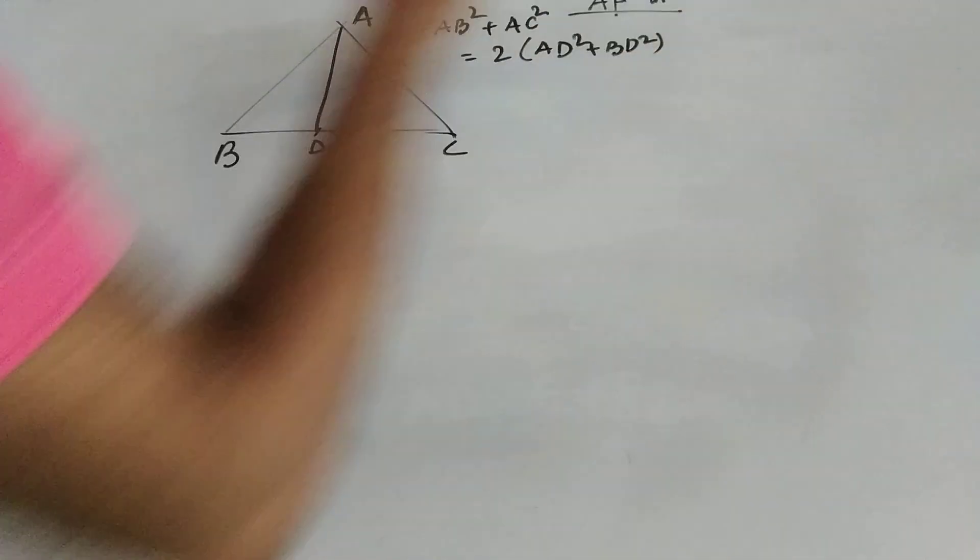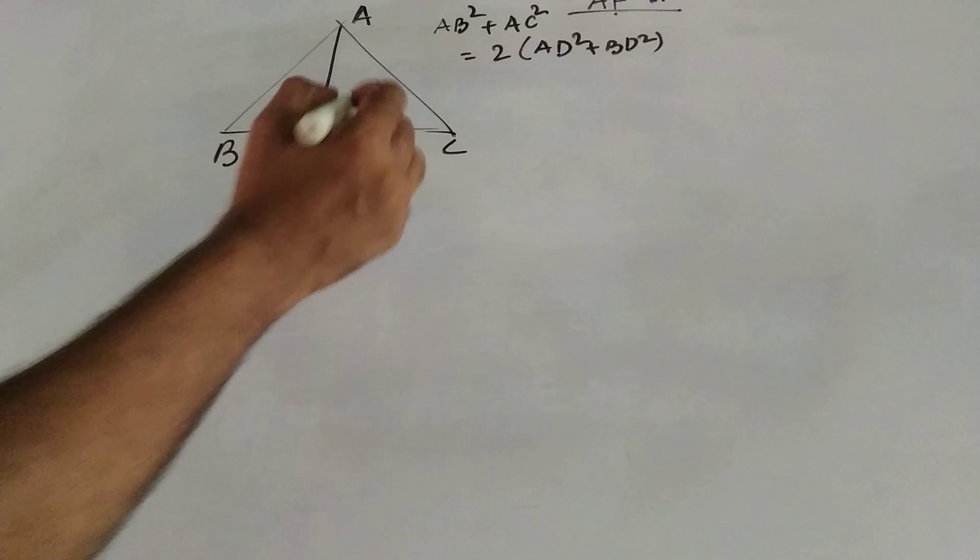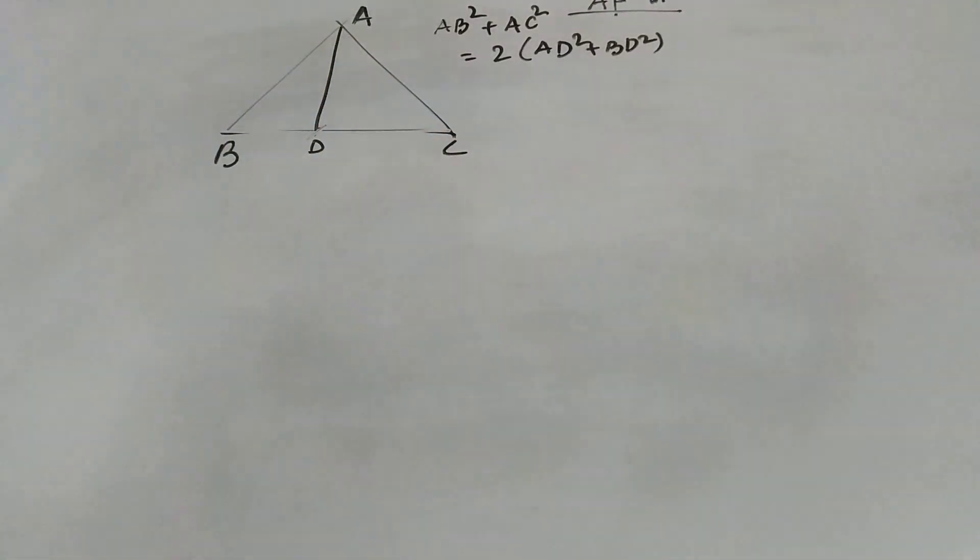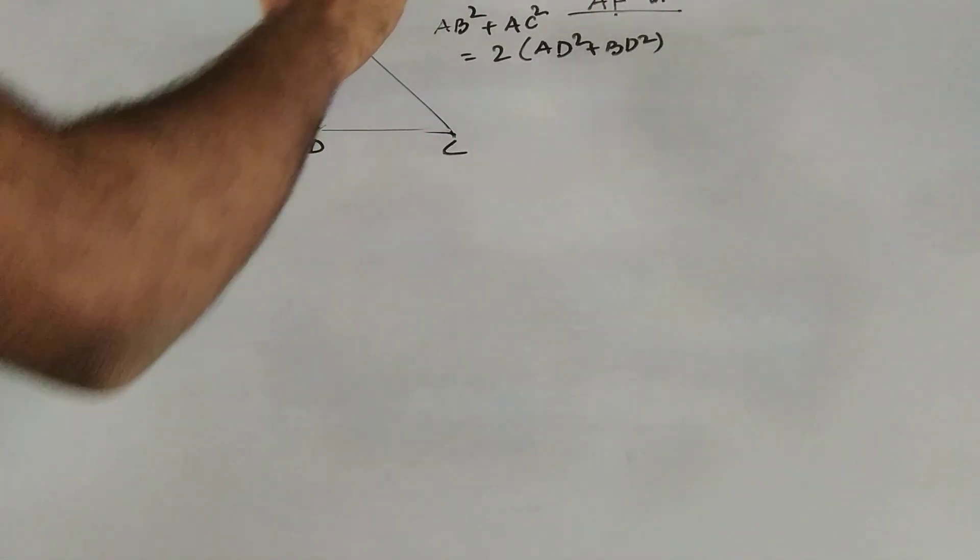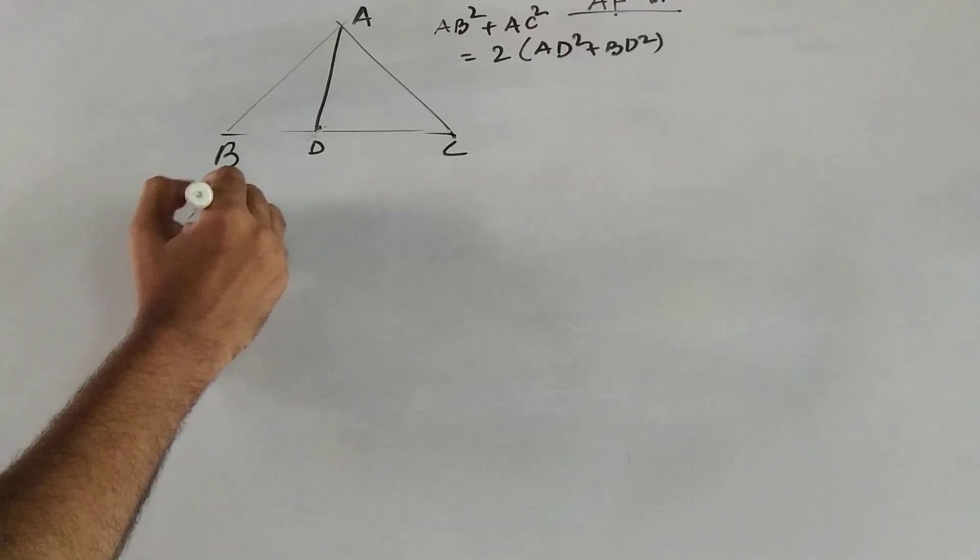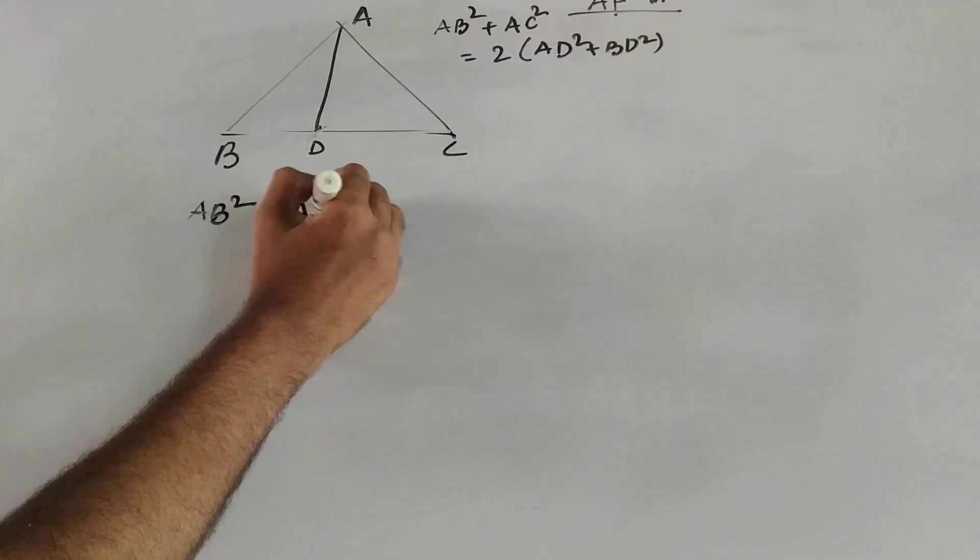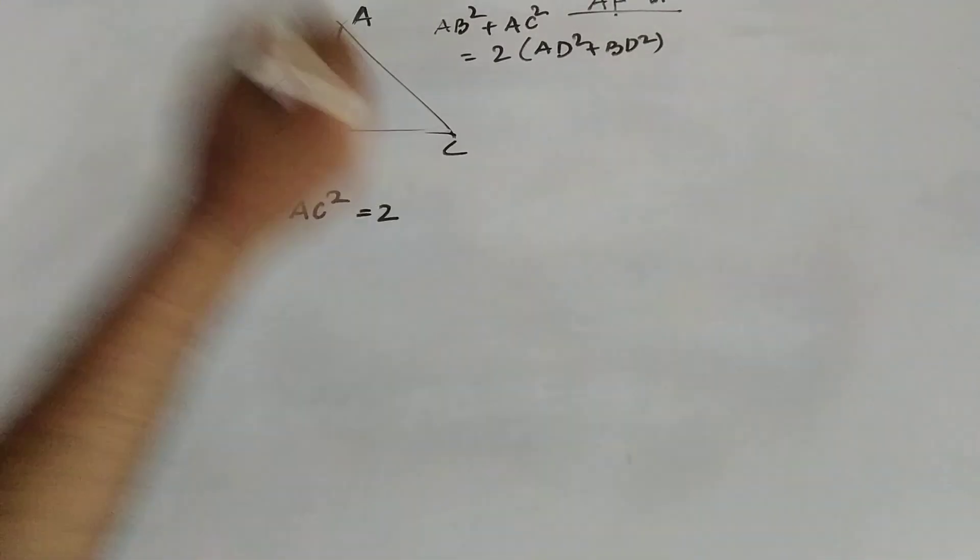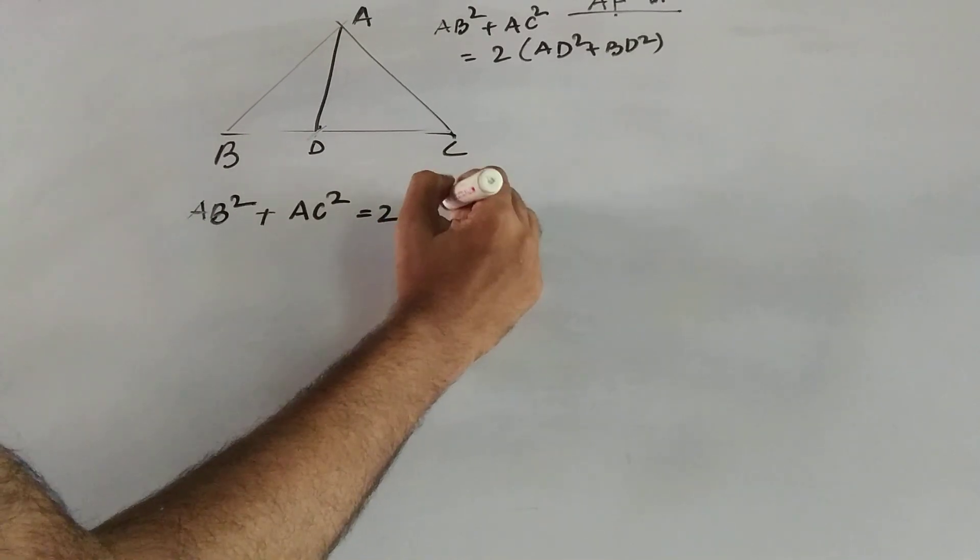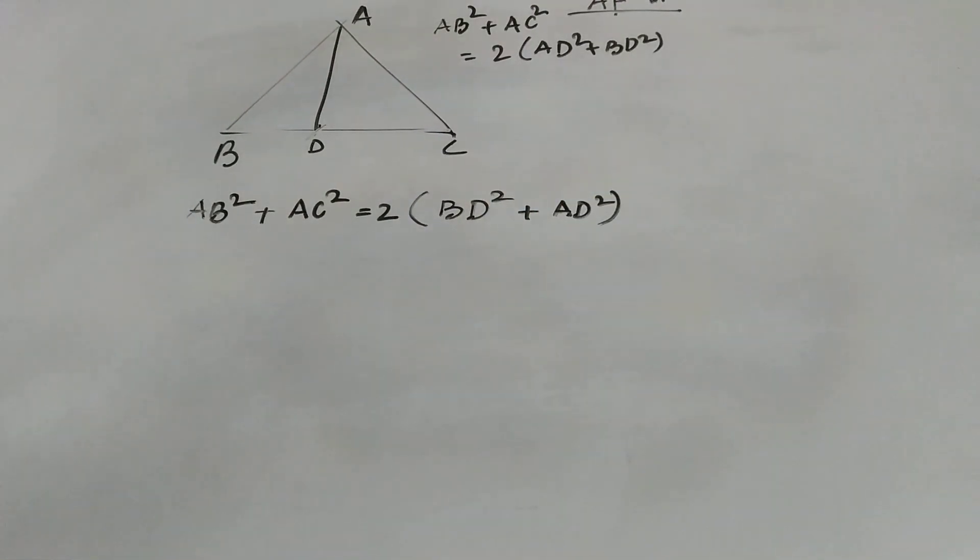We know that this is a well known and proved theorem that AB square plus AC square equal to 2 into AD square plus BD square. That means D is the midpoint of BC. If I connect A to the point D, then I know that AB square, which is one side, plus AC square equal to 2 into BD, that is half of the base BC square, BD square plus AD square. This is Apollonius theorem for any triangle.